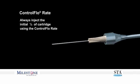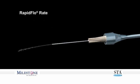Utilize the control flow rate to administer a minimum of one-quarter of the cartridge for the initial phase of the block injection. Once the patient feels the onset of soft tissue anesthesia, transition to the rapid flow rate.